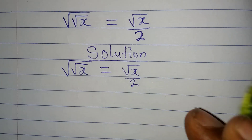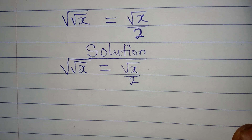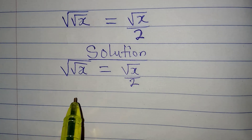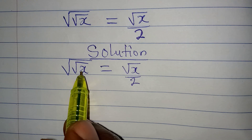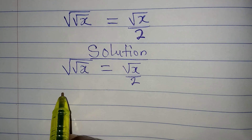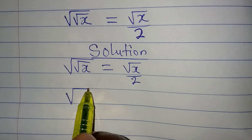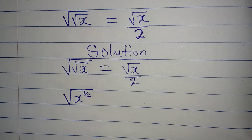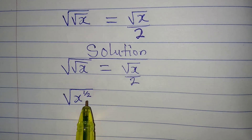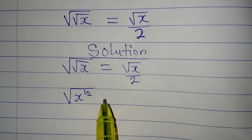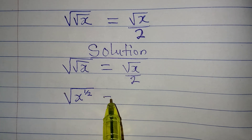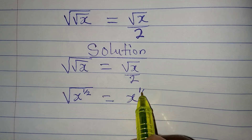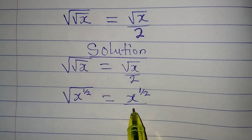This is simple. The square root of the square root of x means we have the square root of x to the power of 1 over 2. Remember, x to the power 1 over 2 means square root of x. So this will be the same thing as x to the power of 1 over 2, all over 2, because of the square root.